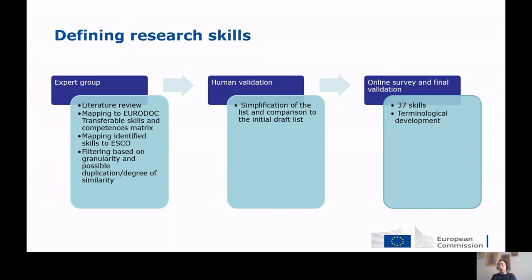When it comes to defining the research skills, an expert group supported the Commission in defining a first list of skills through literature review and mapping to the UBODOC transferable skills and competence matrix. This led to the definition of a set of competencies for researchers, which were then mapped to a final list of skills against the ESCO classification. This list was then filtered, simplified, and submitted to consultation through online surveys and membership consultation. This led to the definition of a final list of 37 skills in ESCO, which were then fully described and adapted to the technological guidelines of ESCO.